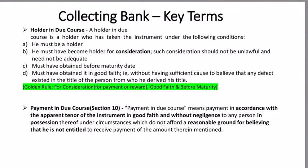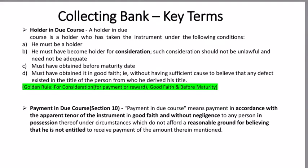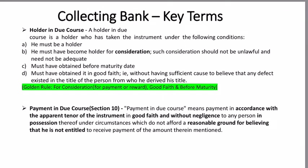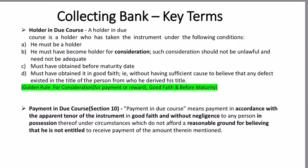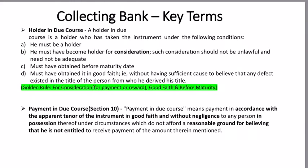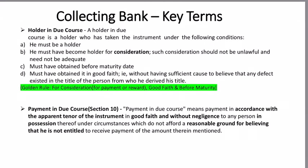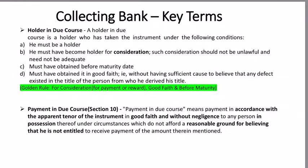Please understand that the holder in due course has the maximum amount of rights amongst these three categories of holders. We studied about endorsement — endorsement can happen across multiple levels. So in case something goes wrong or some fraud happens in the chain of endorsements, the holder in due course can sue all the people who are part of the endorsement chain, or he can sue anyone or all the people. This is not the same right that the holder for value or the holder has.